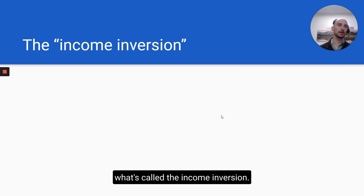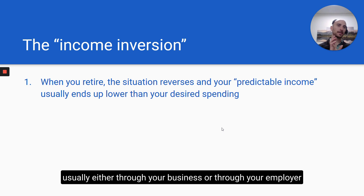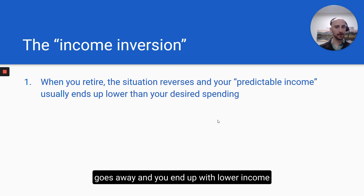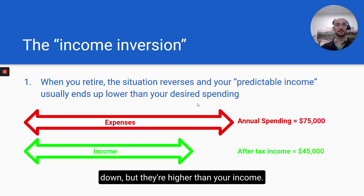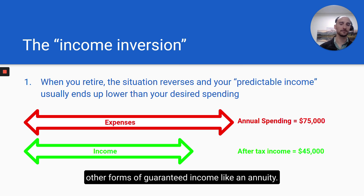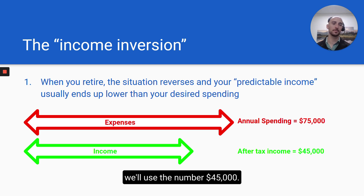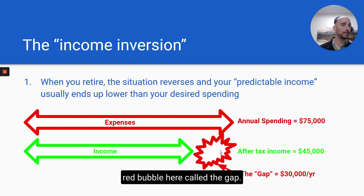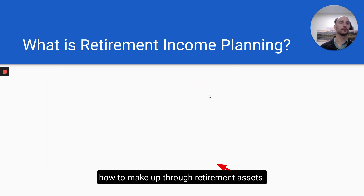When you retire, you face what's called the income inversion. The situation reverses, and the predictable income you had — usually through your business or employer — goes away. You end up with income that's lower than your desired spending. Maybe expenses of $75,000 a year to meet your desired standard of living in retirement. And then income — usually through Social Security, maybe a pension, maybe other forms of guaranteed income like an annuity — comprising something usually less than your expenses, in this example $45,000. That leaves you with this red bubble called the gap: a $30,000 per year difference you need to figure out how to make up through retirement assets.